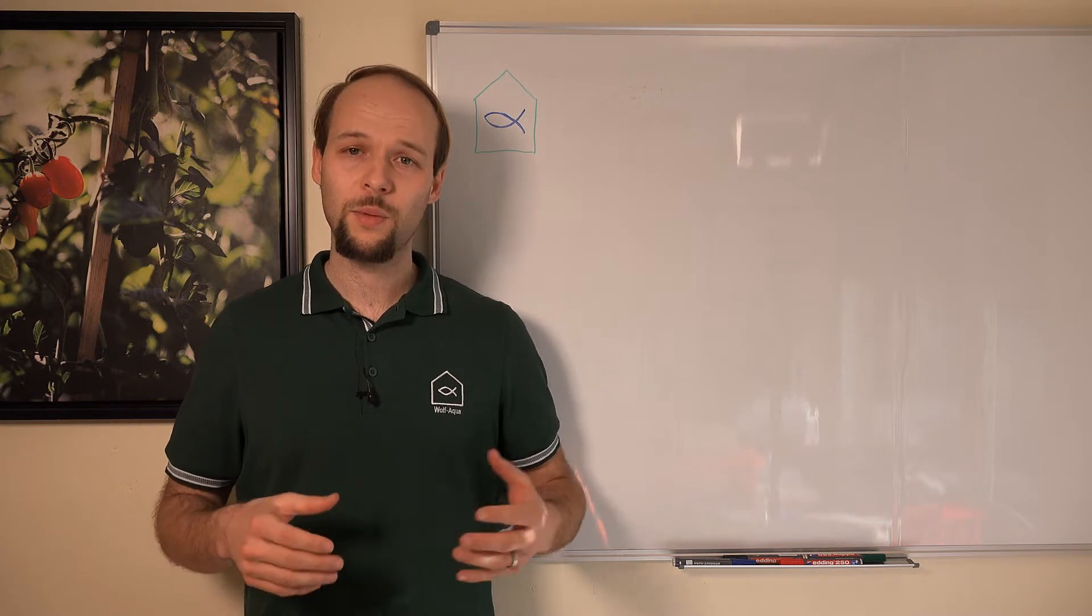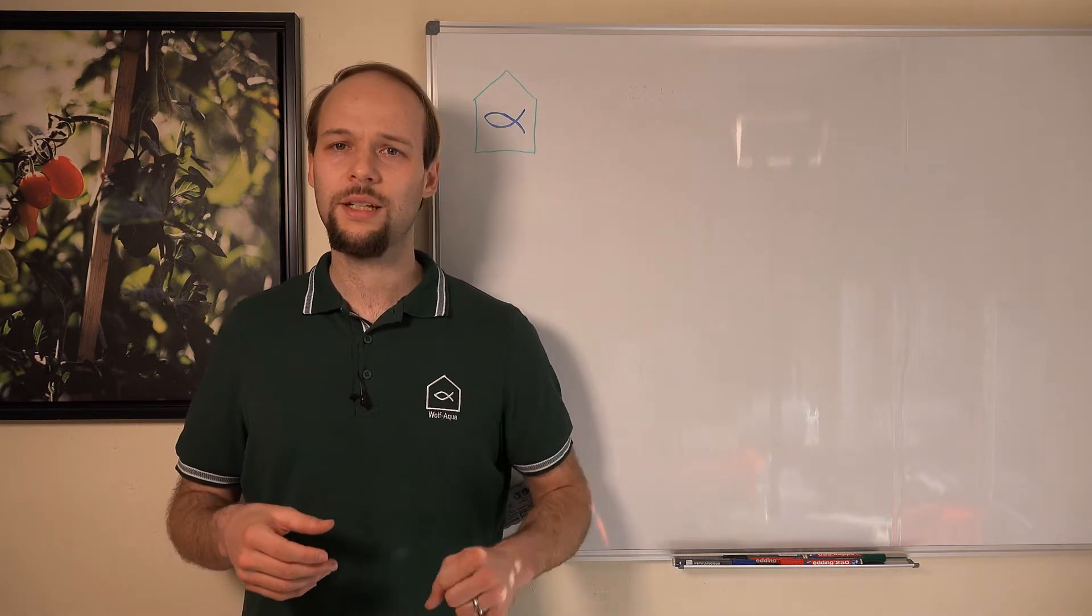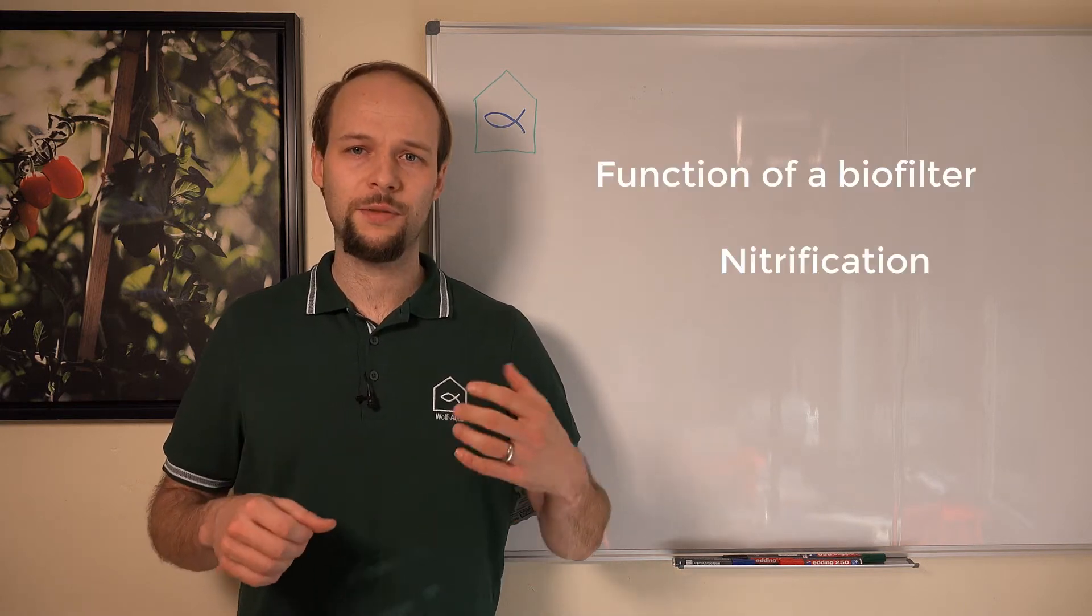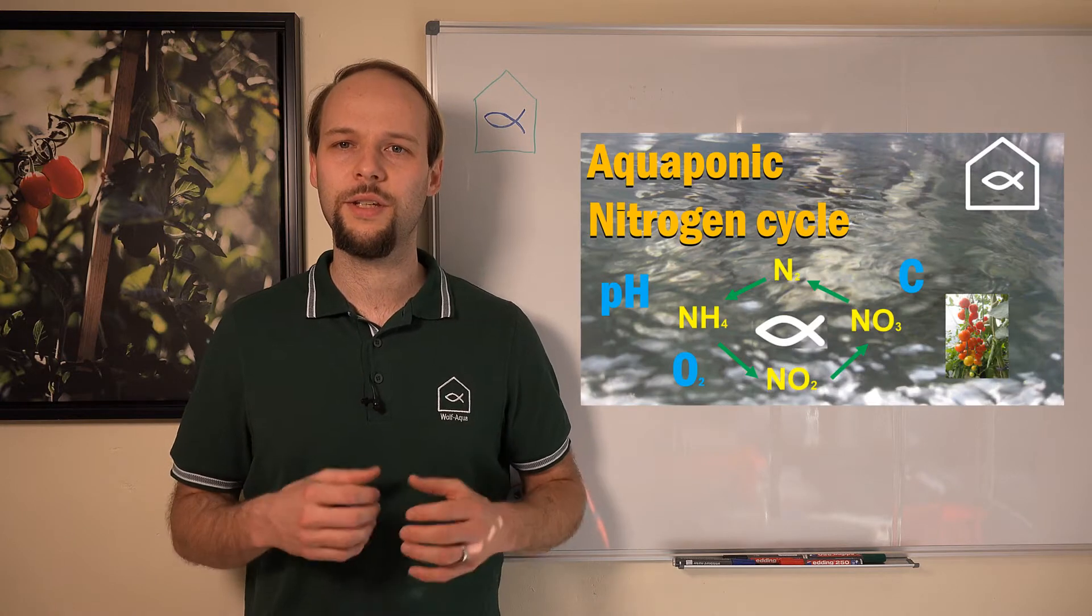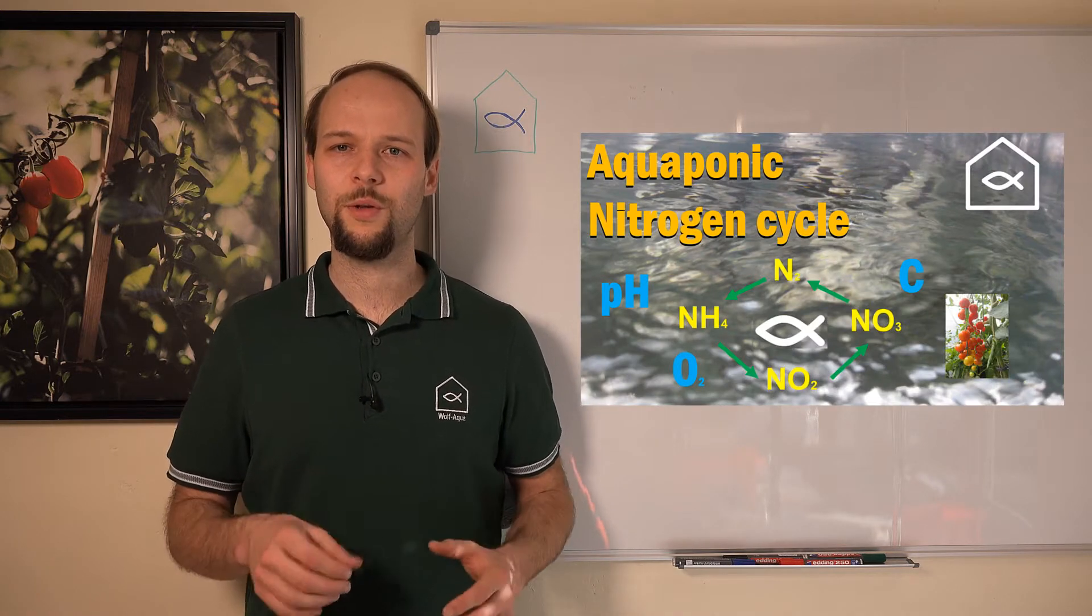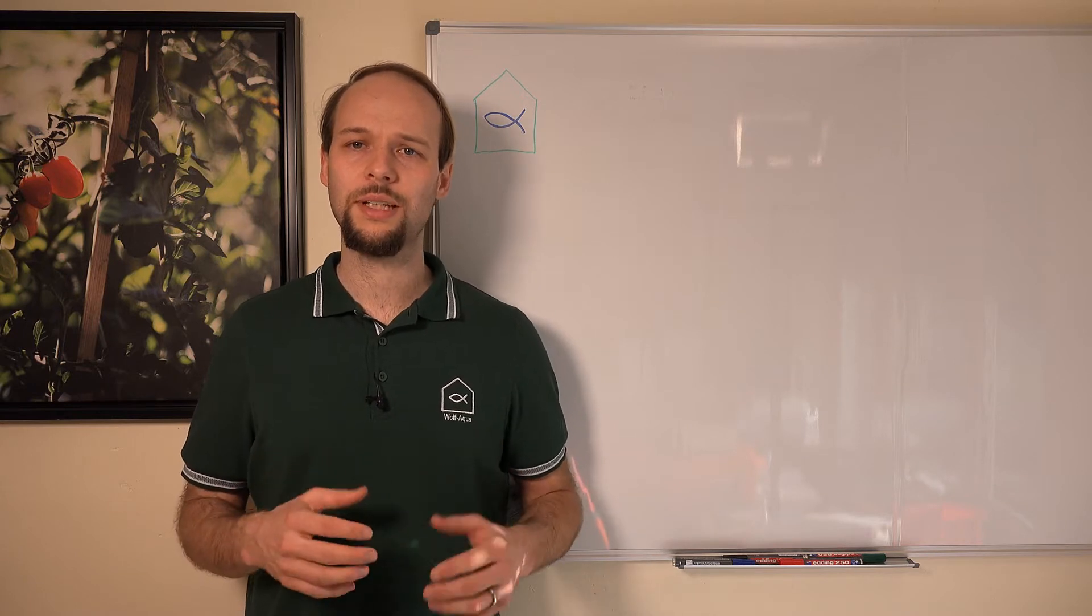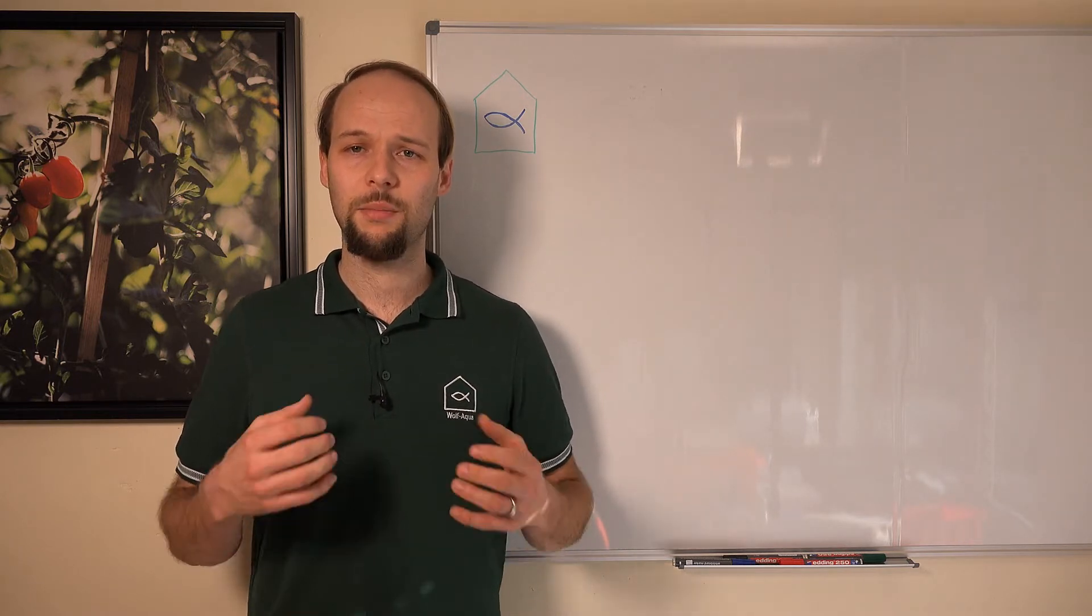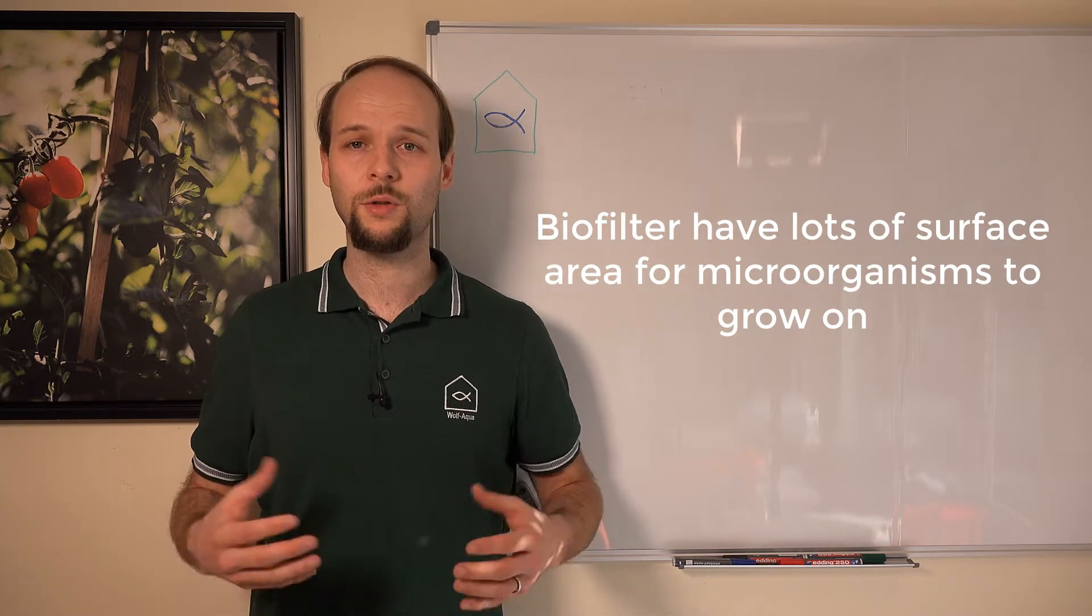The main function of a biofilter in an aquaculture or aquaponics system is to do part of the nitrogen cycle, or more specifically to do the nitrification, so to turn ammonium to nitrite into nitrate. I already made a video about the nitrogen cycle. I'll put it for you here up in the info chart. Basically, all surfaces where bacteria can grow on can serve as a biofilter material. In a biofilter, we are supplying a lot of surface area for the bacteria and microorganisms to grow on.